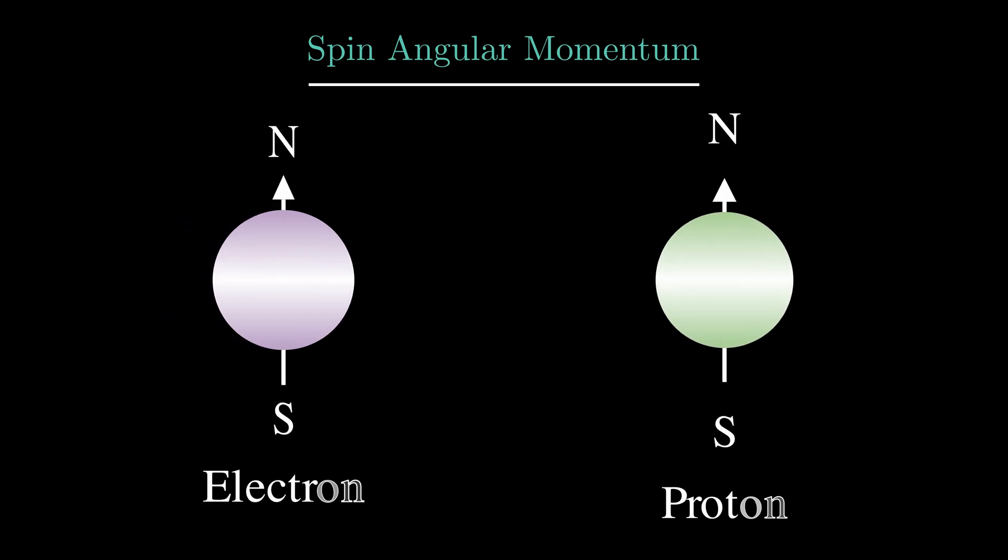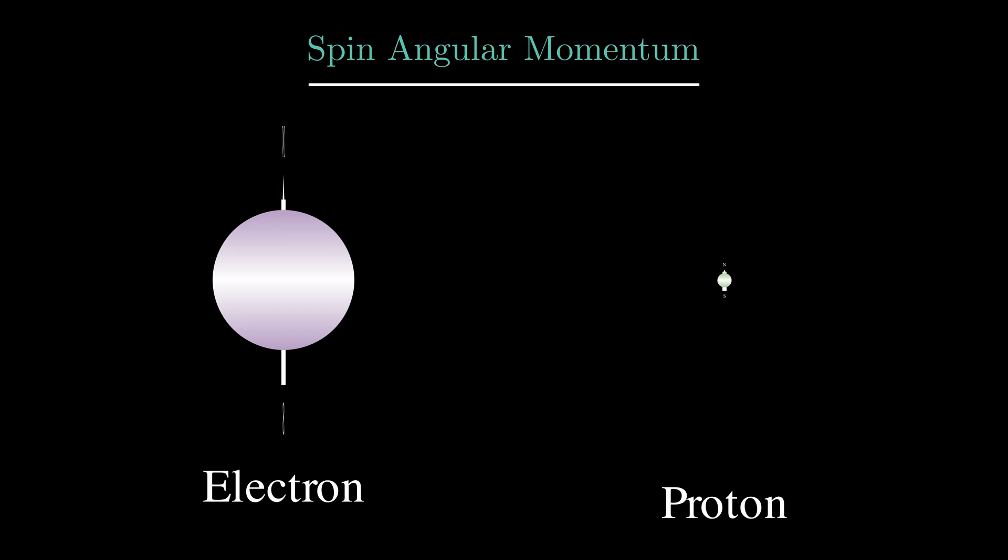Moving on, protons have this property too, but their magnetic strength is extremely smaller than that of electrons. So we can ignore them. But why do electrons and protons have this spin angular momentum? No one knows, they just do. It's like asking why do they have charge or mass? Again, no one knows, they just do.